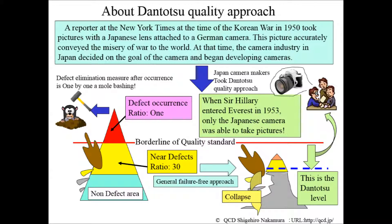By looking from the viewpoint of Heinrich's principle, if a product meets the criteria established by the industry, it becomes a good product. However, Japanese camera manufacturers pursued quality levels far beyond the world level. As a result, the quality of Japanese cameras at present is top-notch, and their international sales share is also number one.